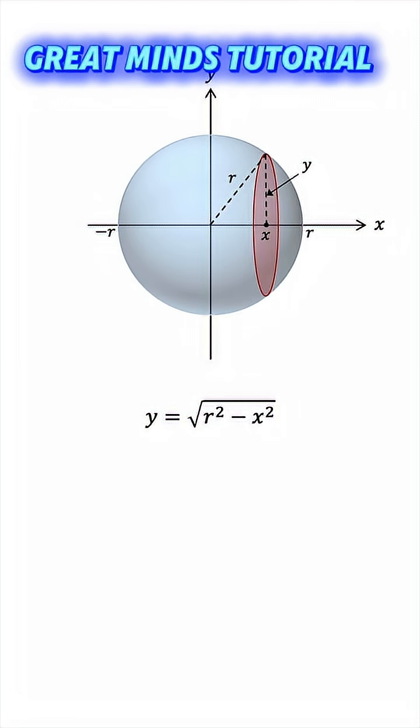And now we'll find the volume of the sphere by adding up all of the differential volumes of the slices. Think of dV as A(x)dx, where A(x) is the cross-sectional area of the slice, which is pi y squared,